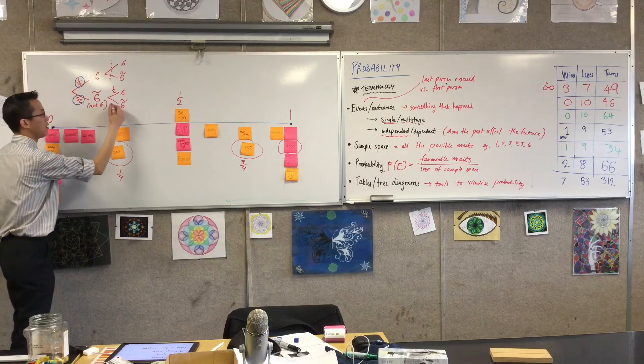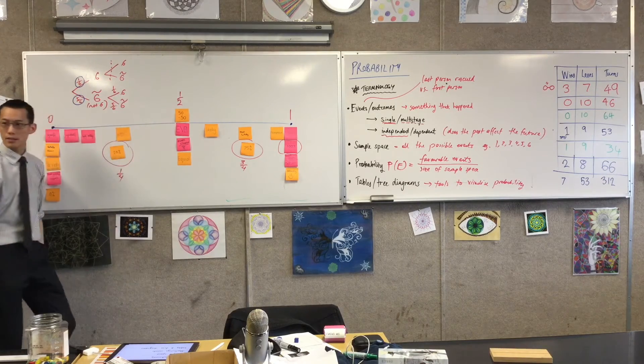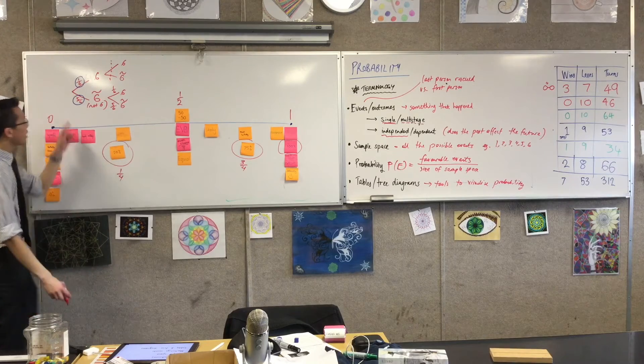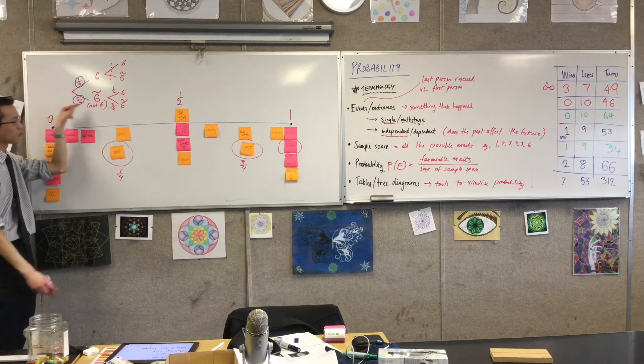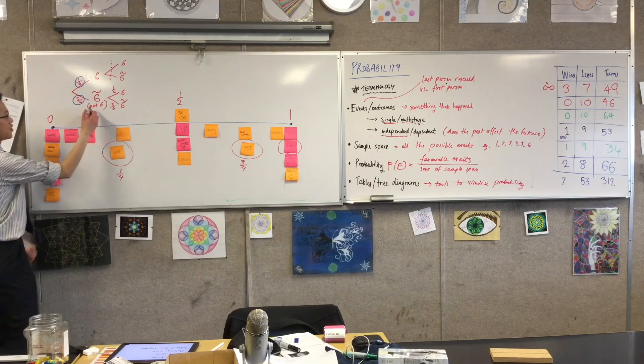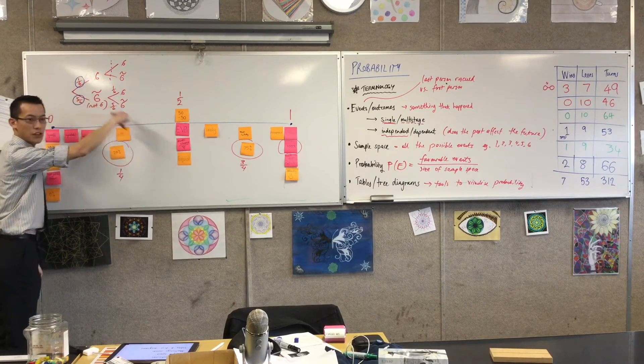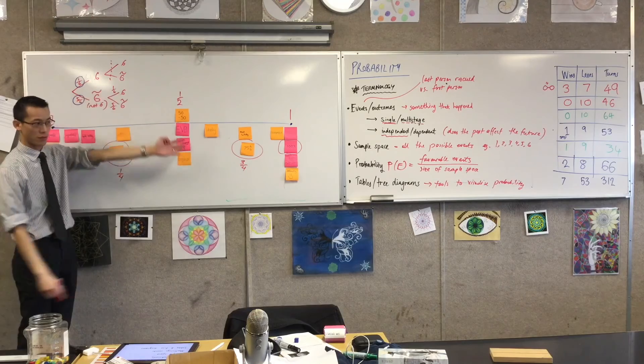You can calculate the probabilities - you told me that it was independent every time, so it's still going to be a sixth every time you roll, and this will still be five-sixths. Which, by the way, explains why it gets harder and harder as you keep on rolling not-sixes - you're going to get five-sixths and five-sixths, and all of these multiply together because you want all of them at the same time.